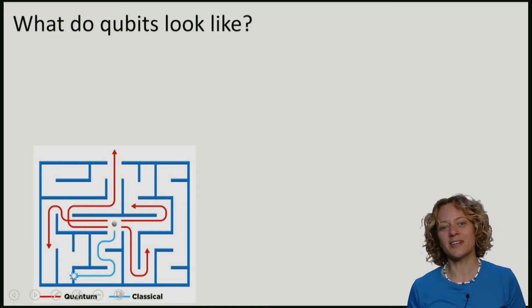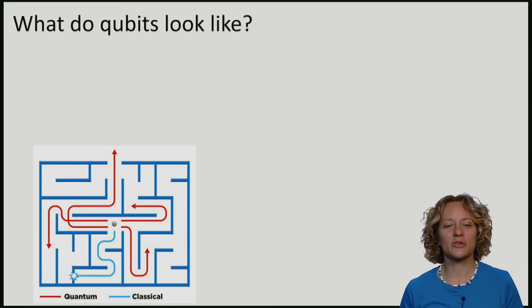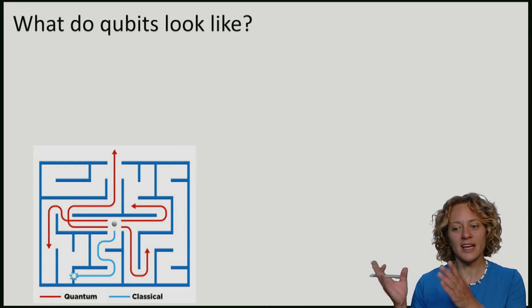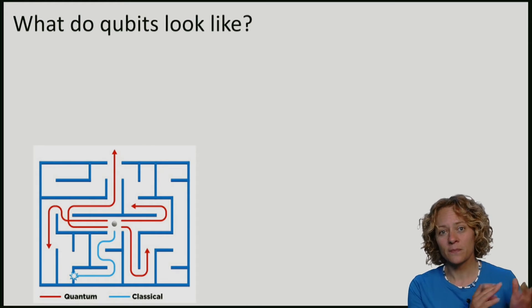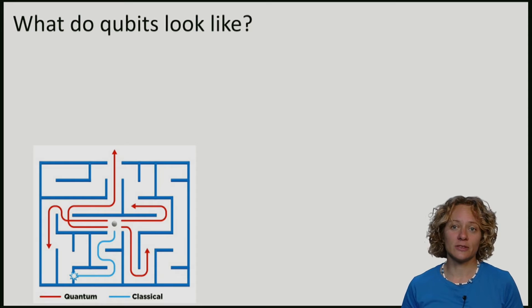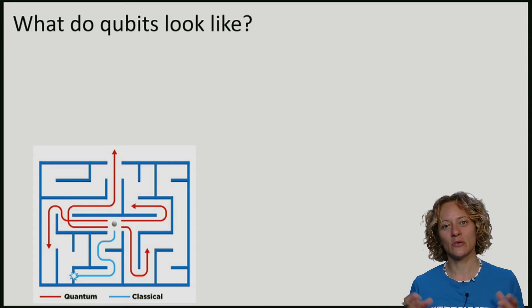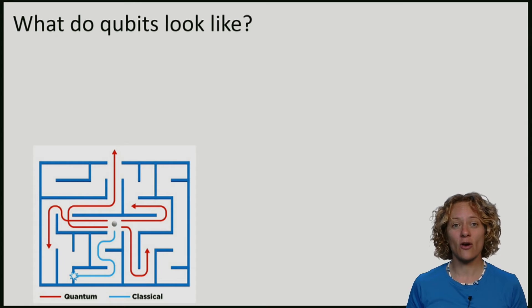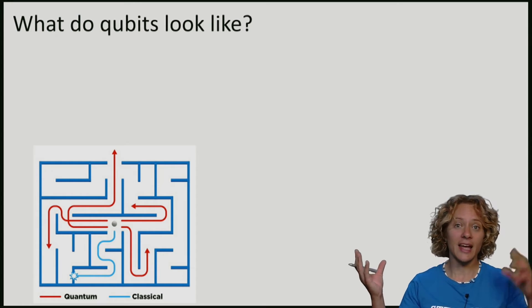When we consider a maze and we were to associate zero with left and one with right, then classically I can send a particle either to the left or to the right. However, quantumly, we can do left and right at the same time. This means that the particle would be in a superposition of being on the left and on the right.